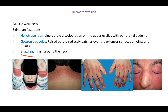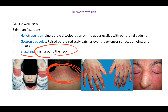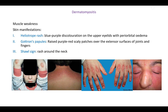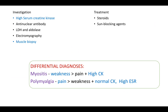The third skin manifestation is shawl sign. A shawl is something you wrap around your neck, so shawl sign refers to a reddish discoloration rash around the neck region.